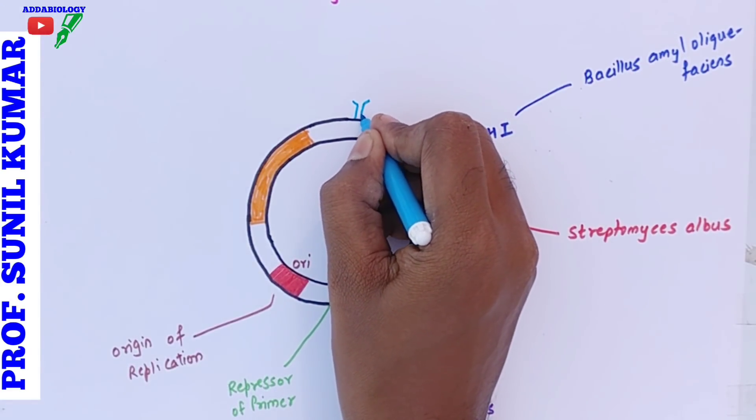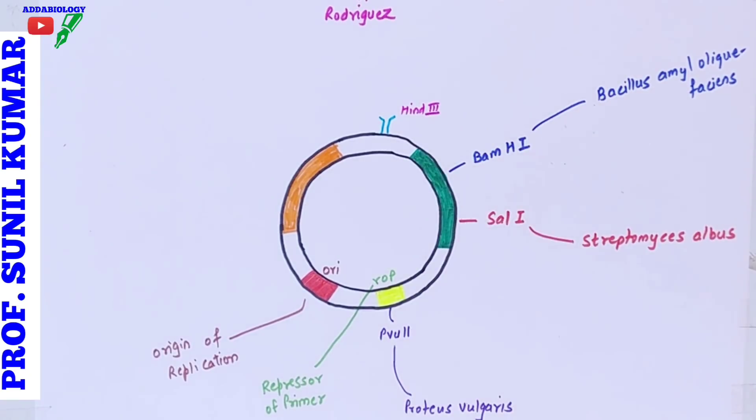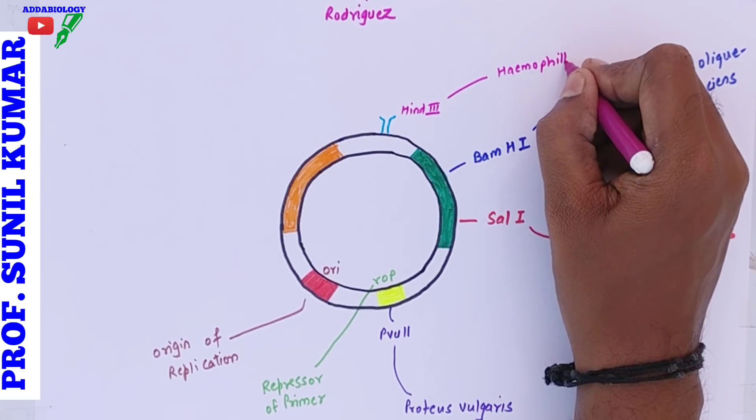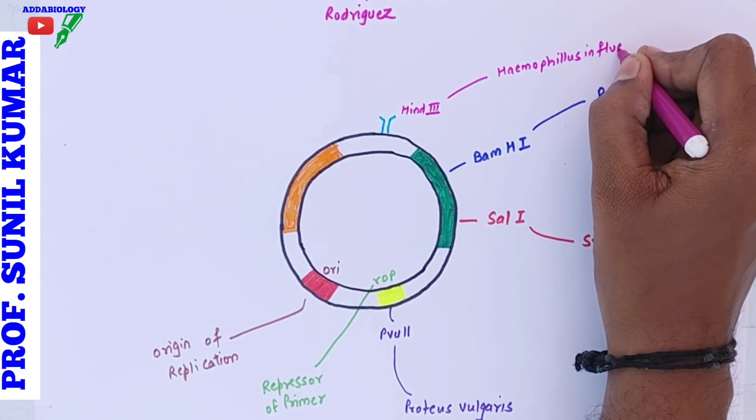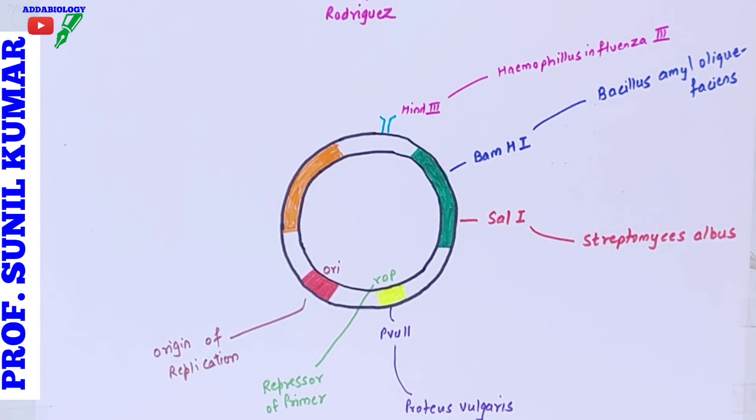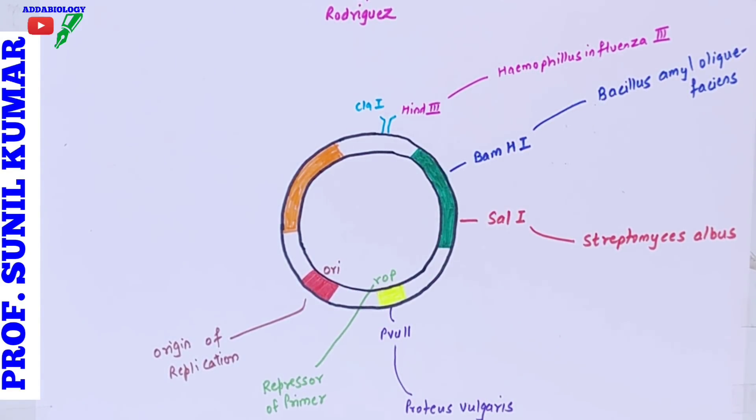It is for HindIII. H stands for the genus Haemophilus, IN stands for the species influenzae, D stands for the strain Rd13, and 3 is the order to be discovered.